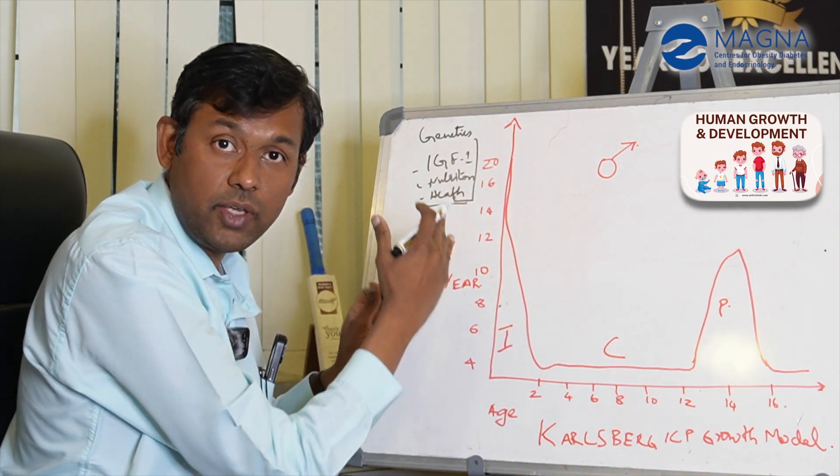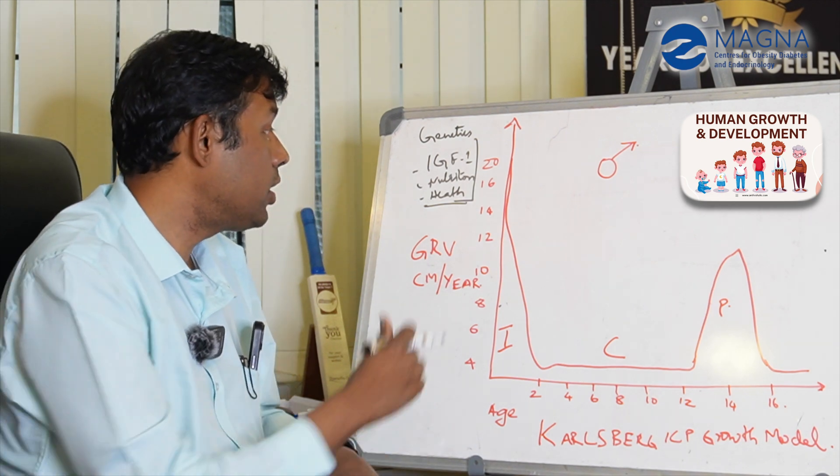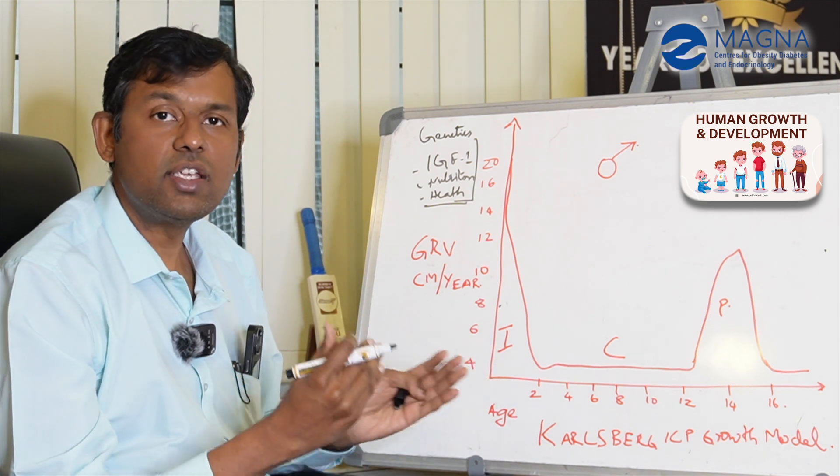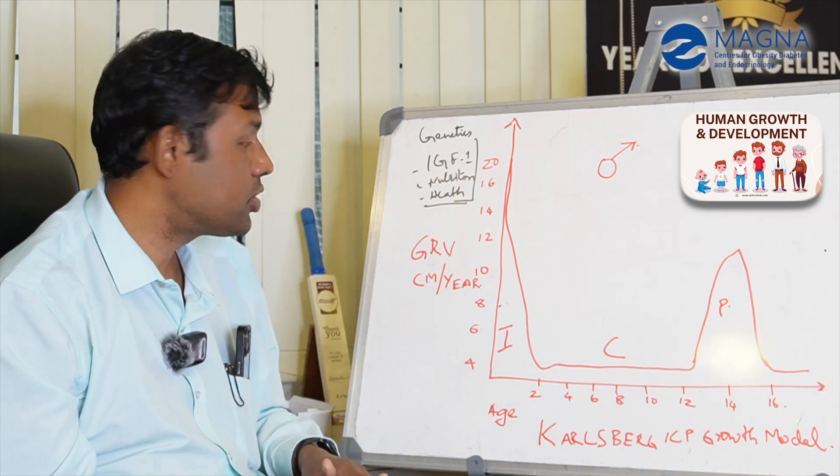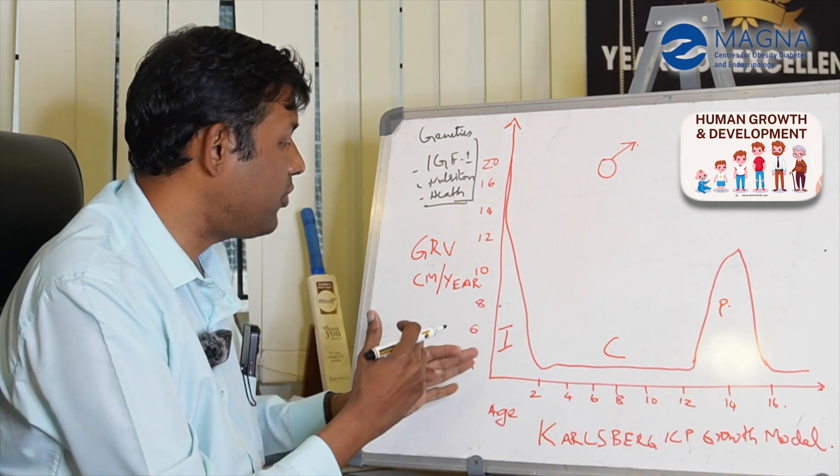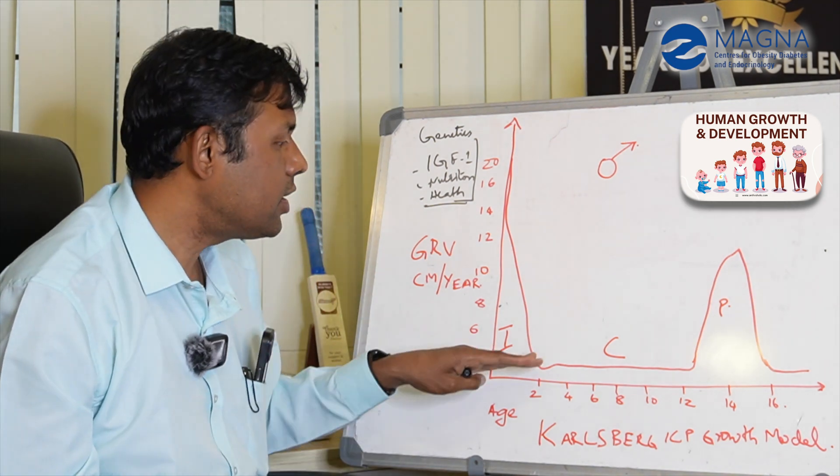This is called the infancy phase of growth, when growth velocity is rapidly decelerating. The first year of life has 25 centimeters of growth, the second year has 12 centimeters of growth, and then the child is down to four centimeters of growth after two or three years.